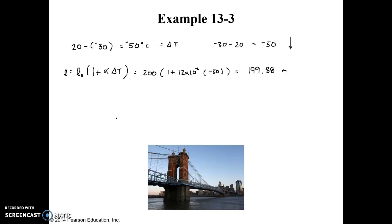So if we want to know the range, the total change from the hottest day to the coldest day, that would be the longest was 200.048, that was on our hottest day. And we subtract from that the length of the bridge on the coldest day, 199.880, and the difference there is a total of 0.168 meters. That's how much it's changing in length from the hottest day to the coldest day. And so that is equal to 16.8 or about 17 centimeters.